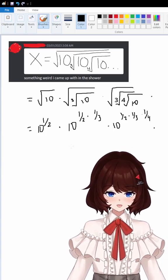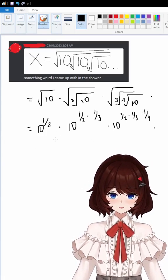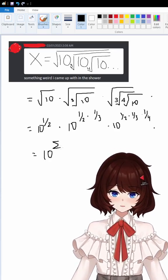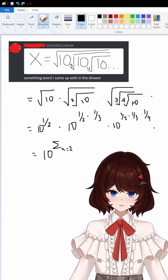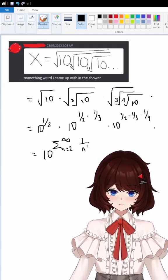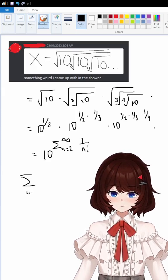But dot dot dot kind of doesn't really mean anything, so we should write this more explicitly with summation from n equals 2 and then all the way to infinity of 1 over n factorial.